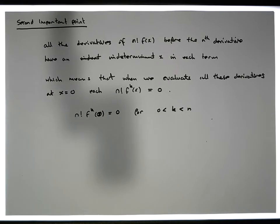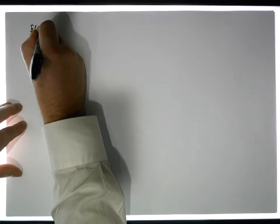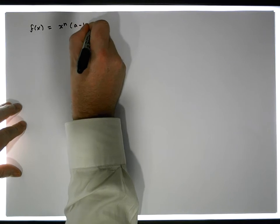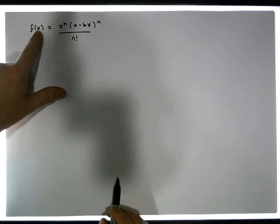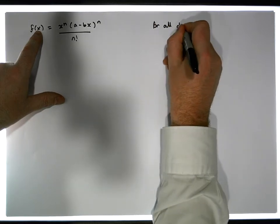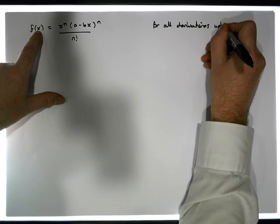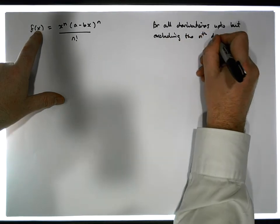This is going to be a long video, but this particular detail will help us understand what's going on. That's one of the important properties of the function f(x) = x^n times (a - bx)^n divided by n factorial. We know that successive derivatives of f(x) evaluated at zero are going to give zero for all derivatives up to but excluding the nth derivative.